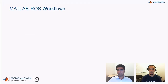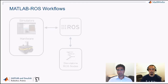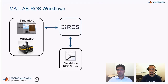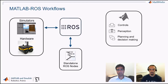Going back to our presentation, let's talk about the workflows possible between MATLAB and ROS. A traditional ROS-based workflow might have platforms like simulators or actual robot hardware, and then what are known as nodes — pieces of code that represent things like algorithms, drivers, or sensor handlers — and they communicate with each other via ROS. With MATLAB, we provide a lot of capabilities for common robotics algorithms like control, perception, planning, and decision making.